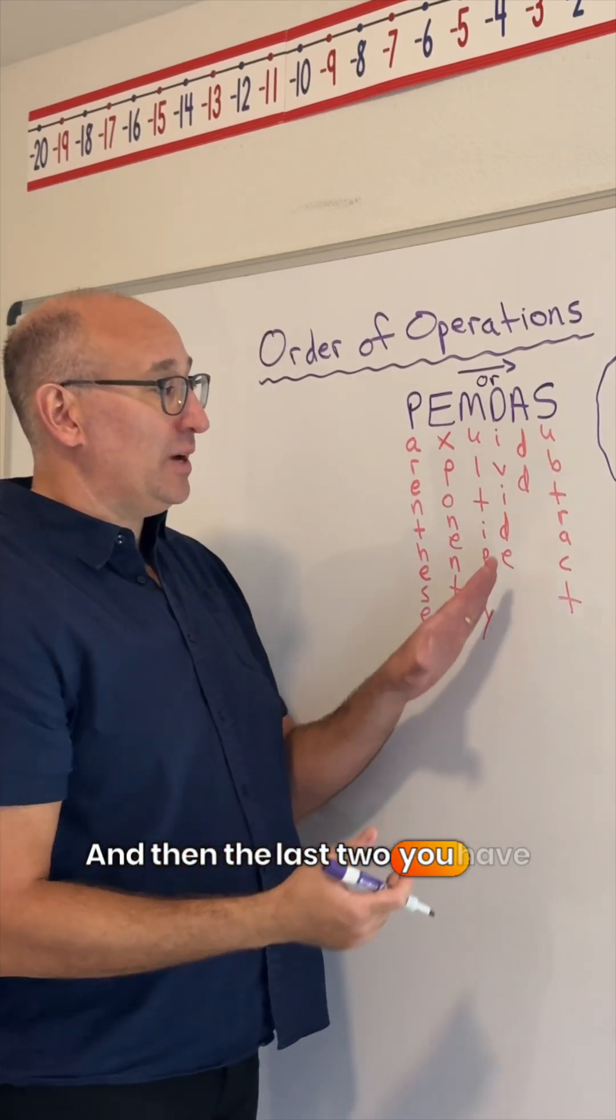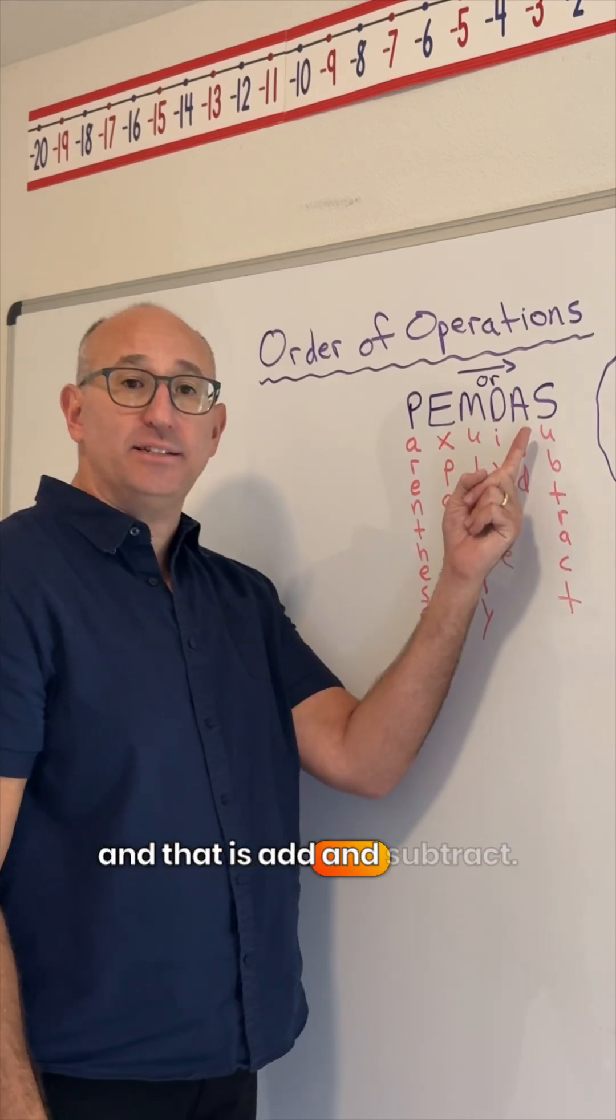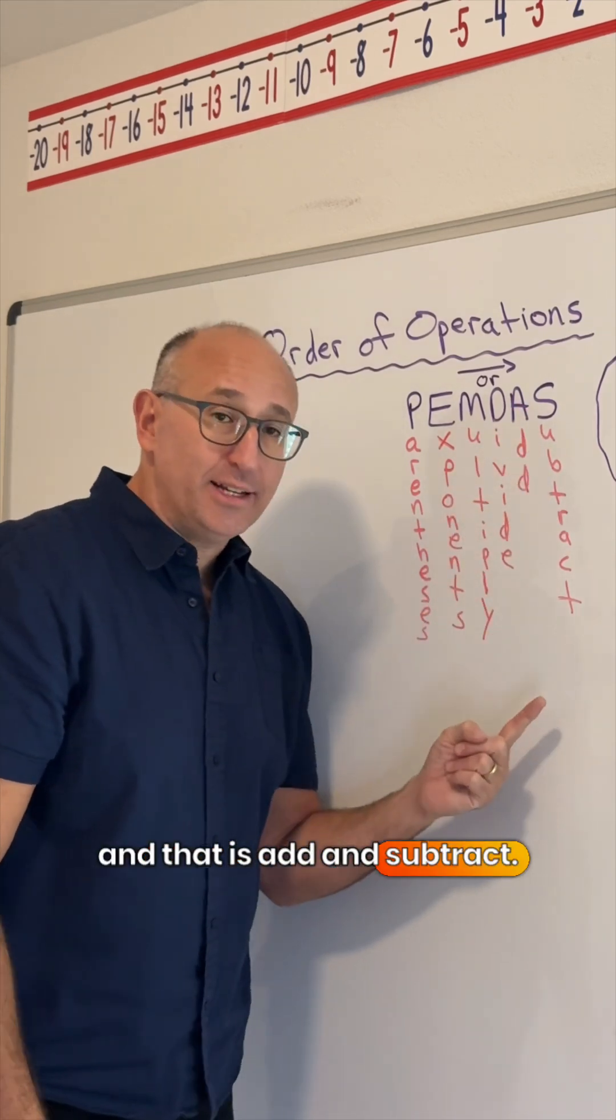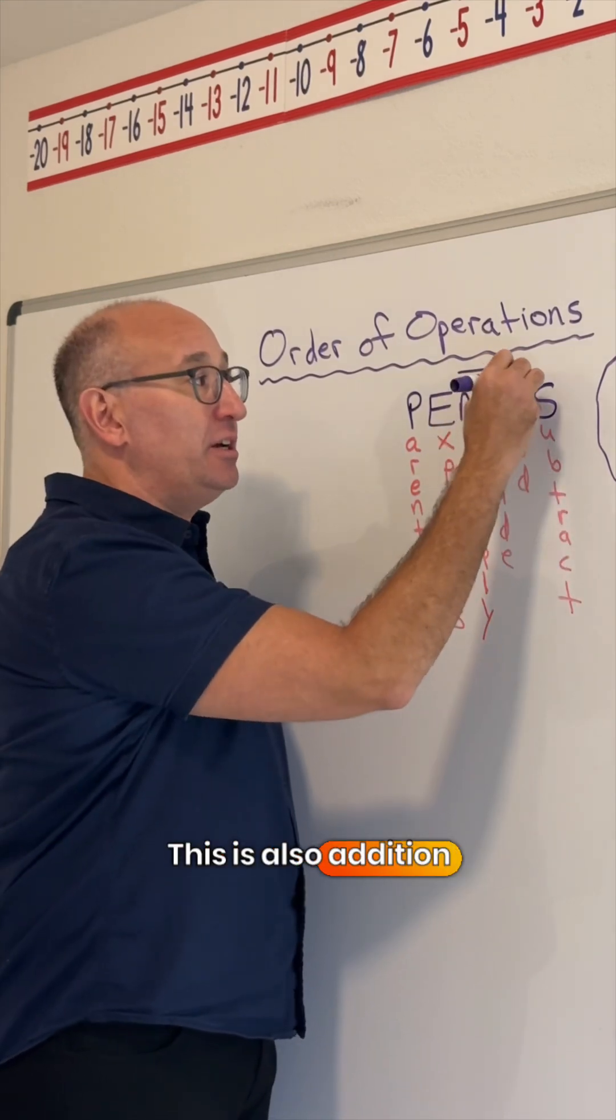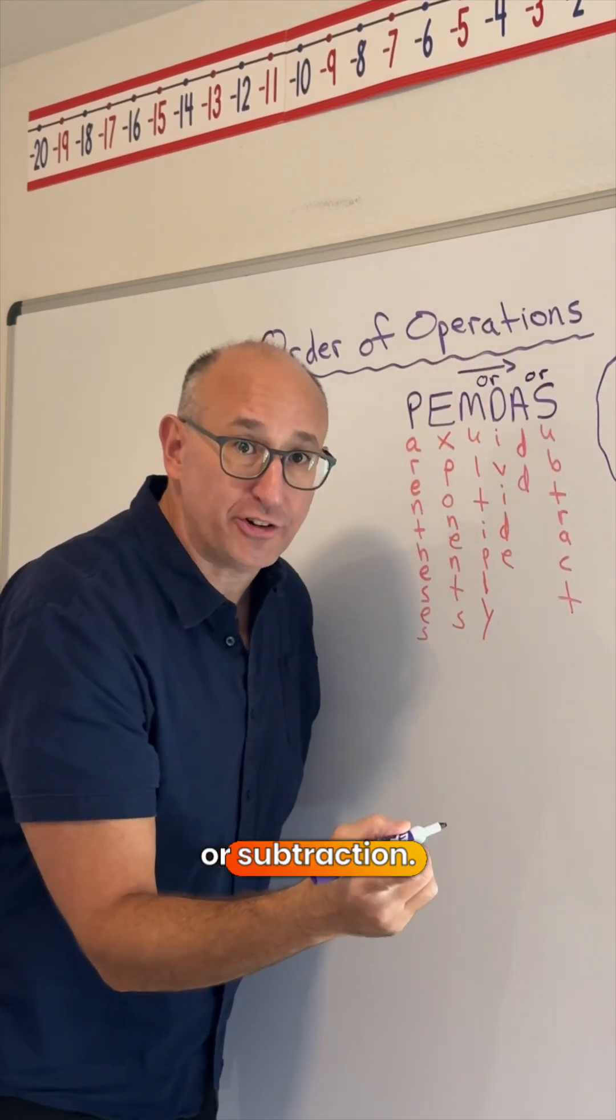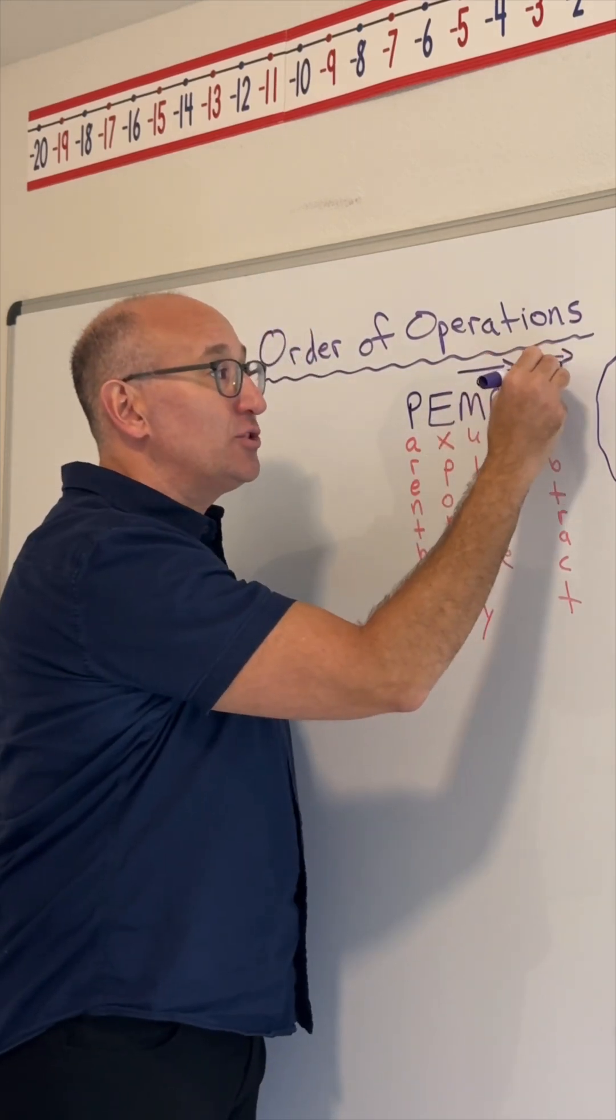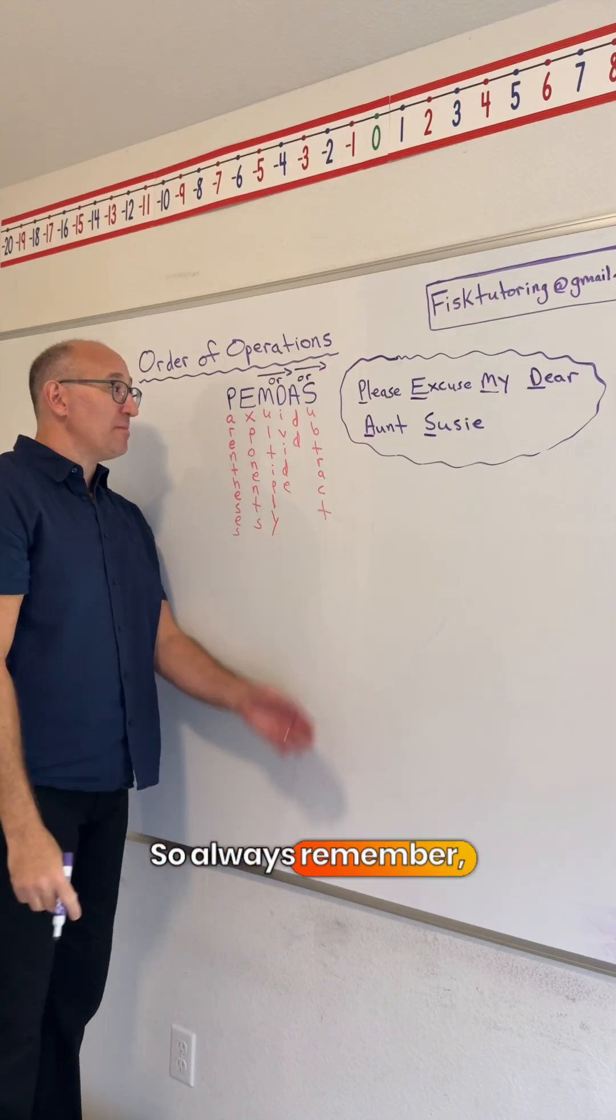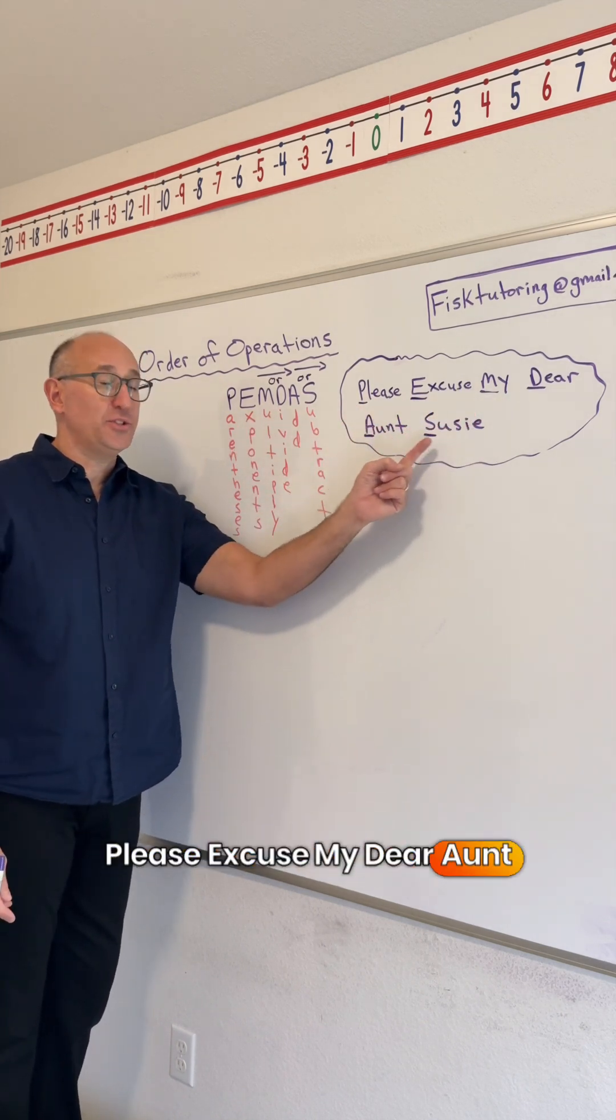And then the last two you have to do is the A and S in PEMDAS, and that is add and subtract. But remember, it's the same as the multiplication or division. This is also addition or subtraction, whatever comes first, moving left to right. So always remember PEMDAS, and you can always remember, please excuse my dear aunt Susie.